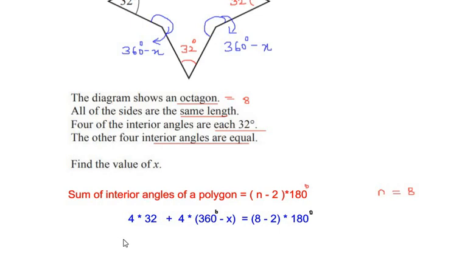So 4 times 32 gives us a value of 128, plus let us expand this bracket: 4 times 360 degrees gives us a value of 1440, and 4 times negative x gives us minus 4x. This is equal to 8 minus 2 is 6 times 180 degrees.